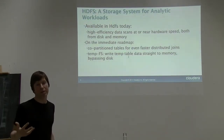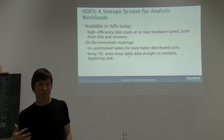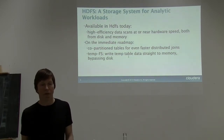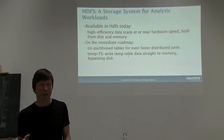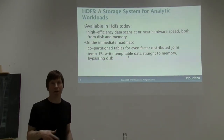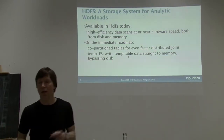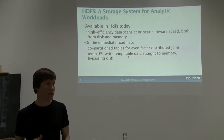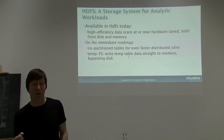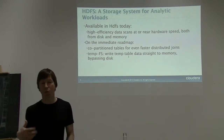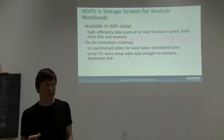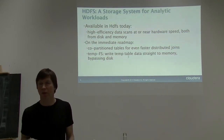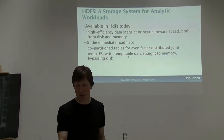Starting with HDFS: what does it give you today? You already get the capability of doing high-efficiency data scans, which are very important for analytic workloads. On the roadmap is the ability to co-partition tables—something many parallel database systems do. If two large tables are frequently joined on the same columns, you can co-partition them and physically co-locate the matching pieces, turning a distributed join into a local join. For iterative workloads, such as data science or machine learning, it would also be interesting to generate intermediate result data that stays entirely in memory and never hits disk—similar to a tempFS functionality.